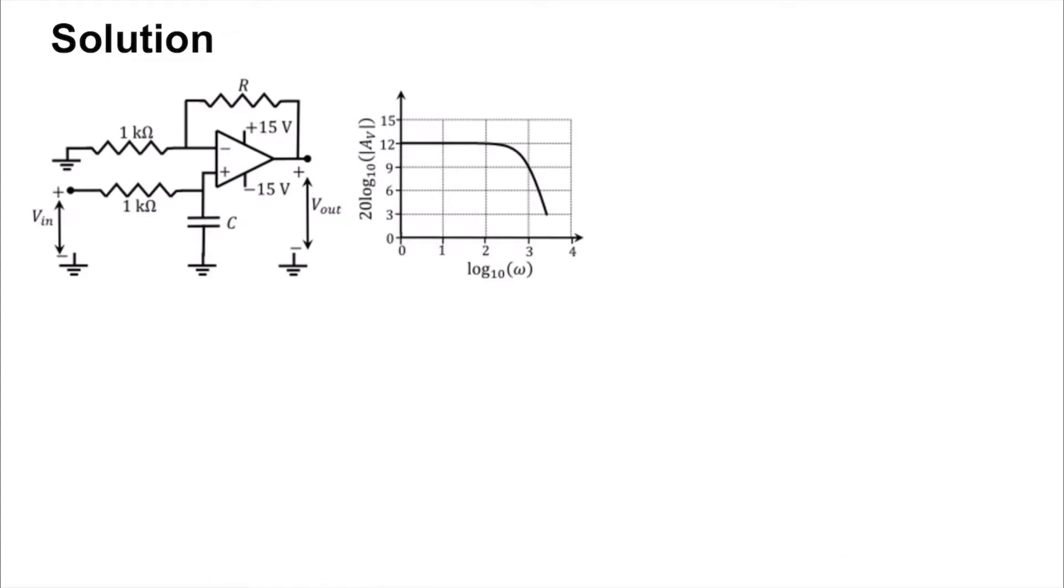So the idea is that this is a low pass filter circuit with amplification. What you can see over here is the gain in decibels plotted against the frequency. So the maximum gain over here is 12 dB.